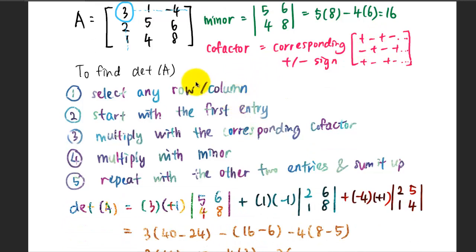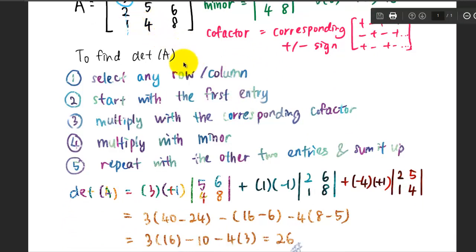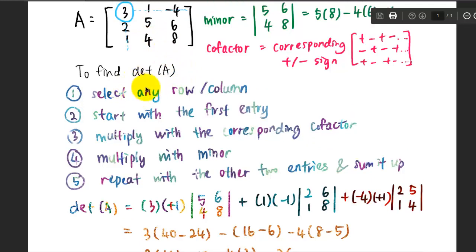To find the determinant of A for a 3 by 3 and above matrices, first you select any row or column. You can select this column or this row, it doesn't matter. And you identify the first entry, then multiply it with the corresponding cofactor.